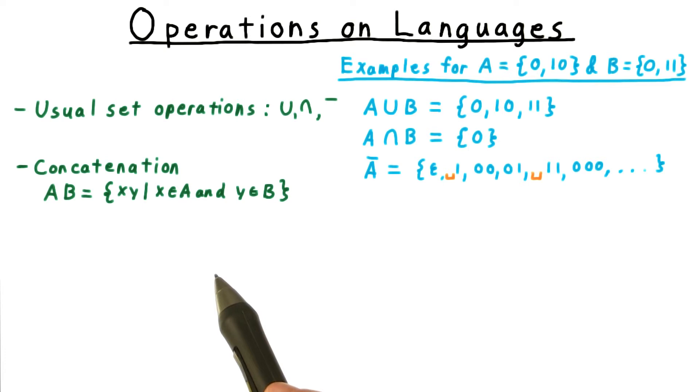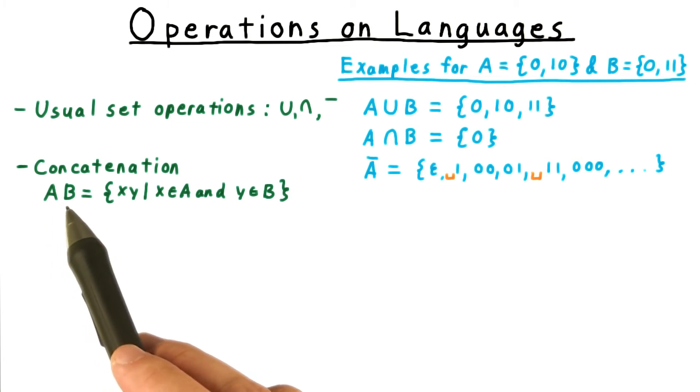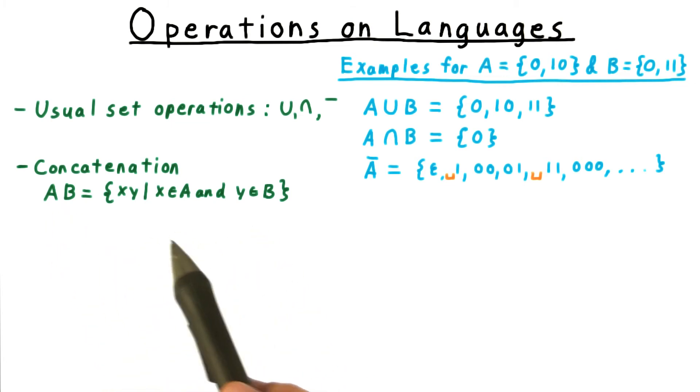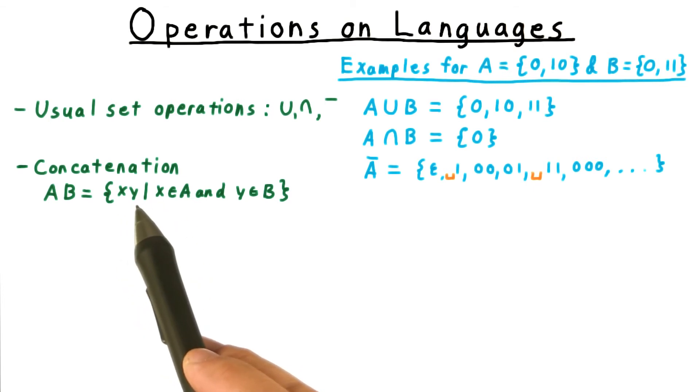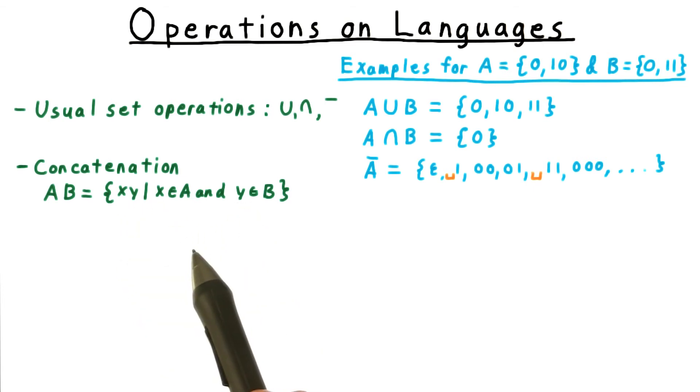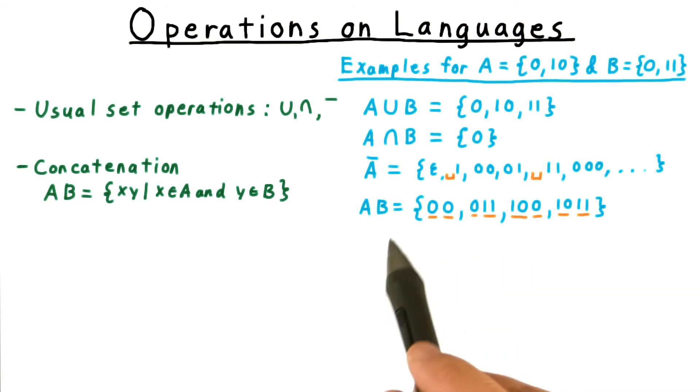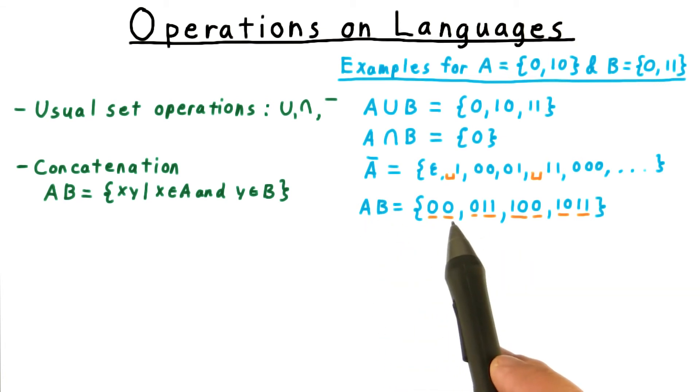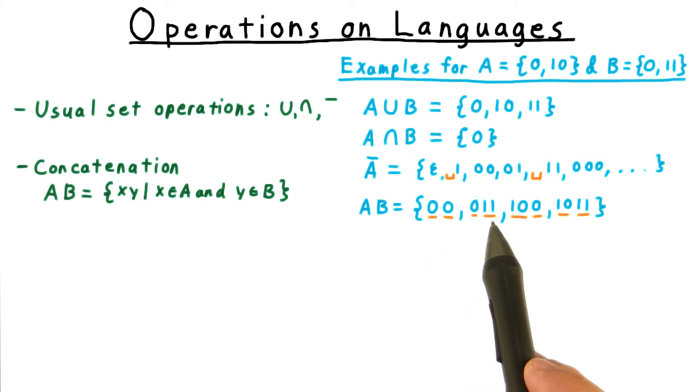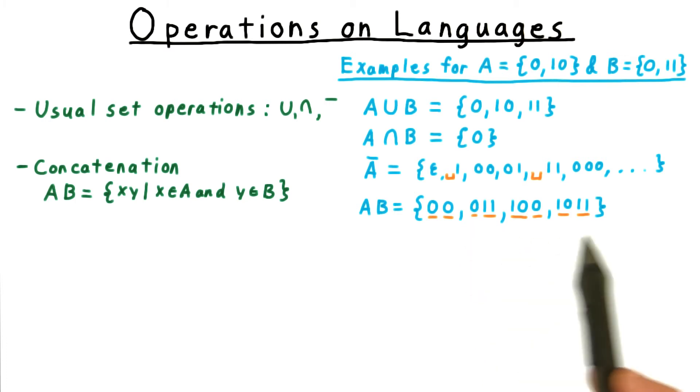In addition to these standard set operations, we also define an operation for concatenating two languages. The concatenation of A and B is just all strings that you can form by taking a string from A, let's say x, and appending to it a string y from B. In our examples, the set AB would be 00, the first 0 coming from A and the second from B; 011, with the 0 coming from A and the 11 coming from B, and so forth.